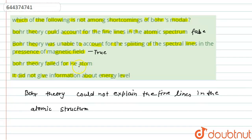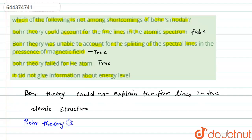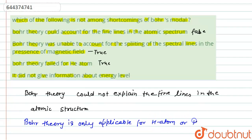The third option states that Bohr's theory failed for the helium atom. This is also a true statement, because Bohr's theory is only applicable for the hydrogen atom or hydrogen-like ions.